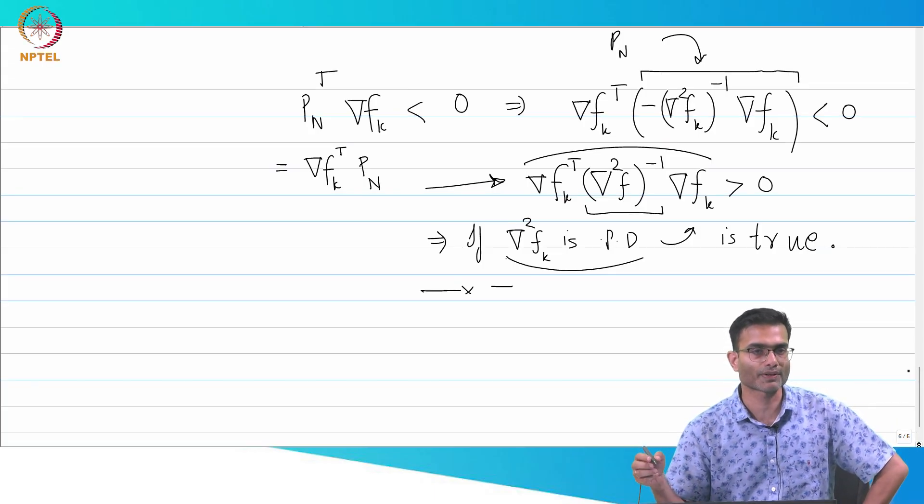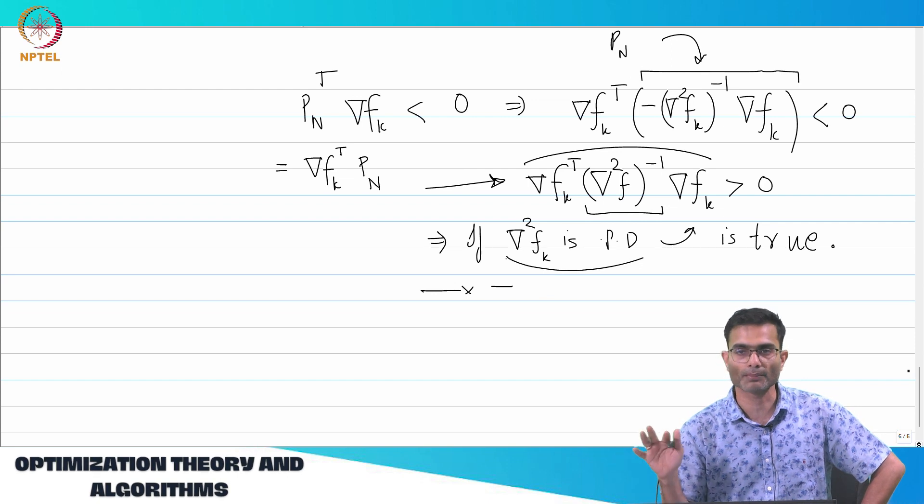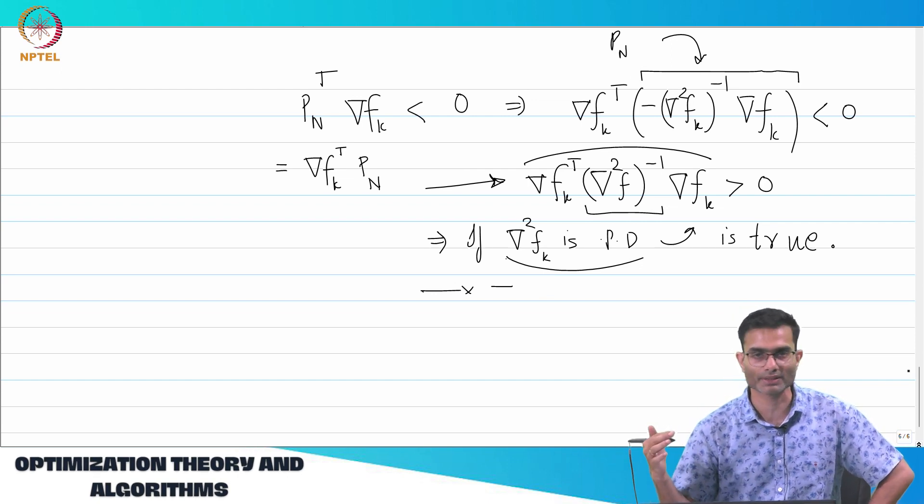So this was as far as we wanted to talk in a general way about what are the qualities of a descent direction.